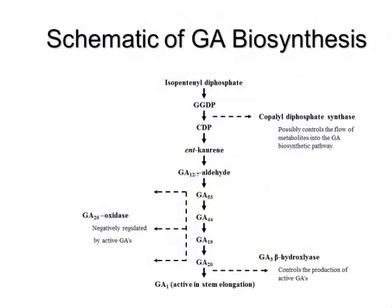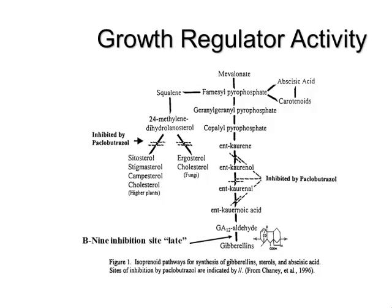Gibberellic acid biosynthesis occurs in a multi-step pathway. Different growth regulators work at different points. When we have mevalonic acid, it goes different directions. When we apply anti-gibberellins like paclobutrazole — brand name Bonzi — the gibberellic acid metabolism is interrupted. When we interrupt this process, some of these chemical compounds become chlorophyll, so if we apply anti-gibberellins, we get more chlorophyll and plants have a deeper, darker green color — a bonus.